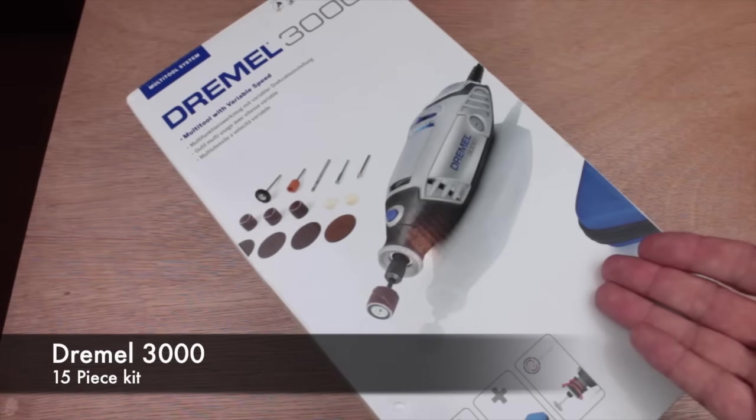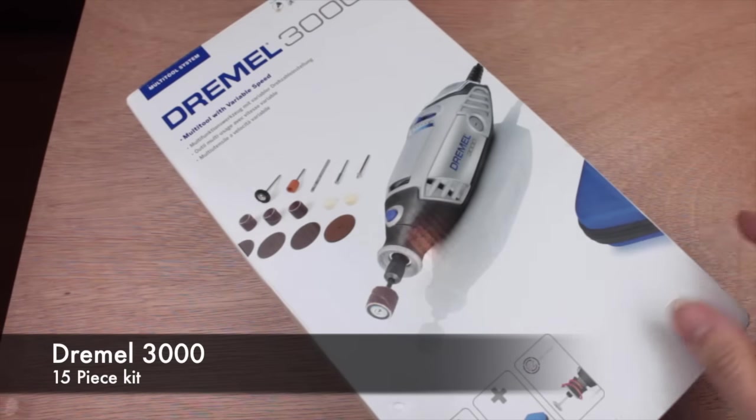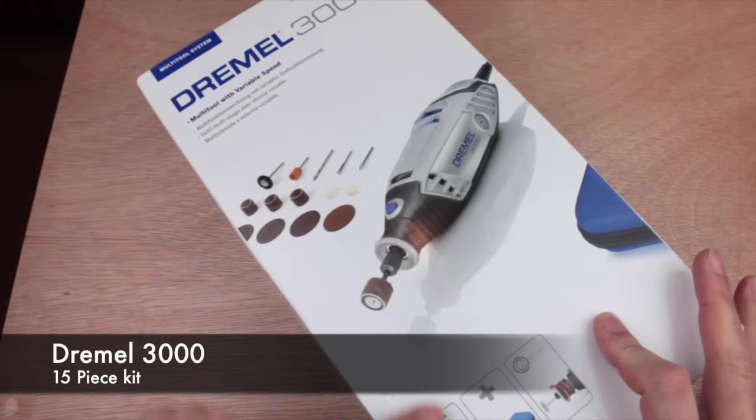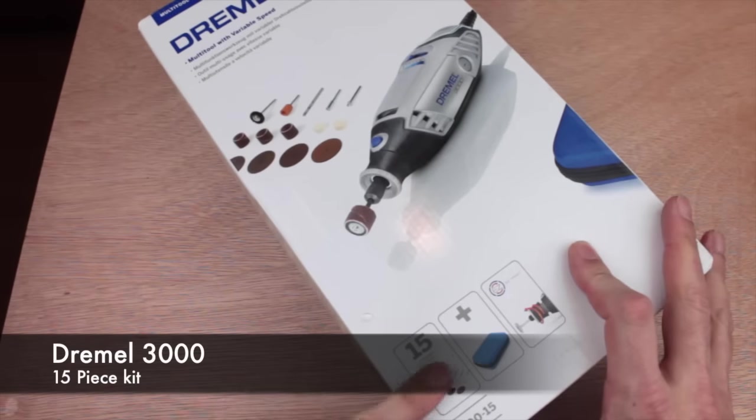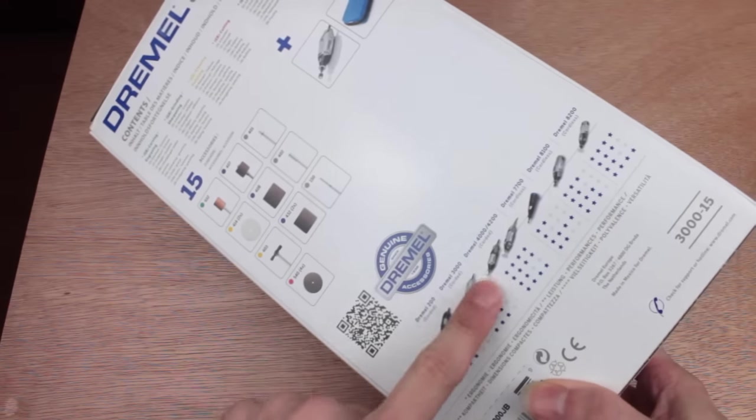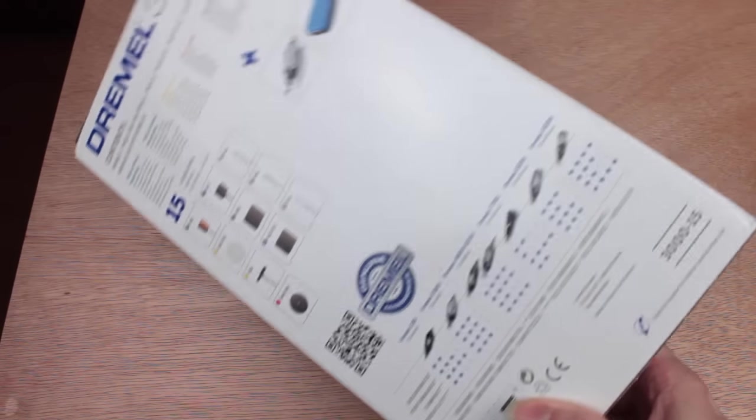So first up, this is the box it comes in. Full color box, nice packaging. You can see the photographs on the front tells you what's included in the box, and on the back you've got some information on the different models available and some of the accessories that you can get. Nice, lovely, attractive gift packaging.